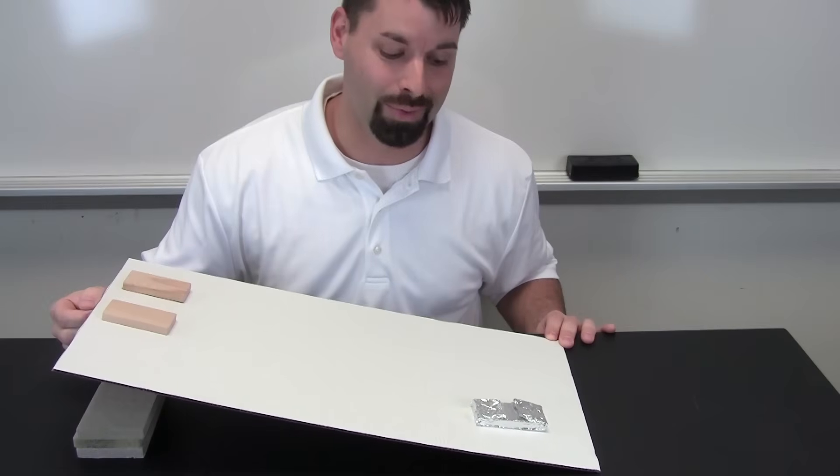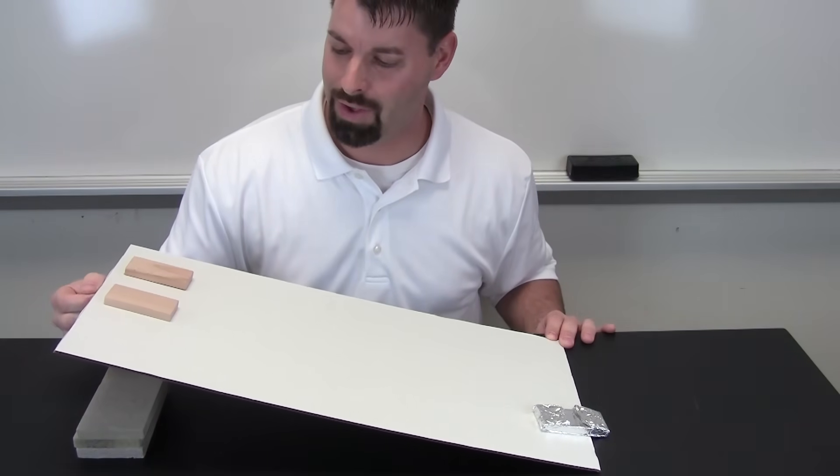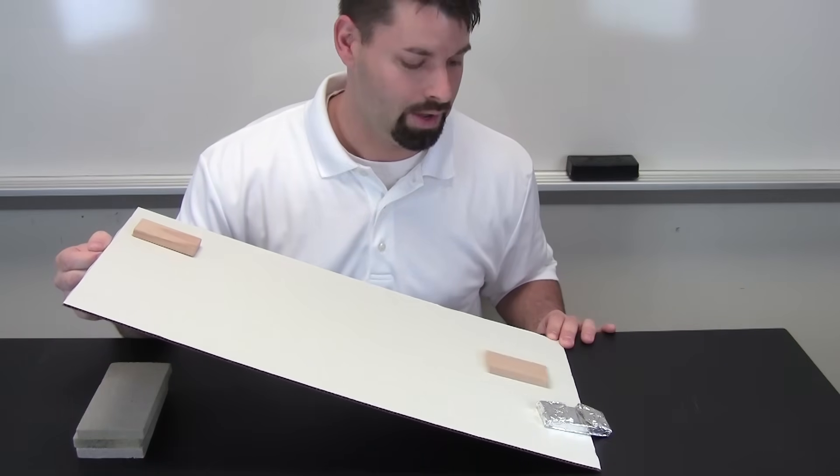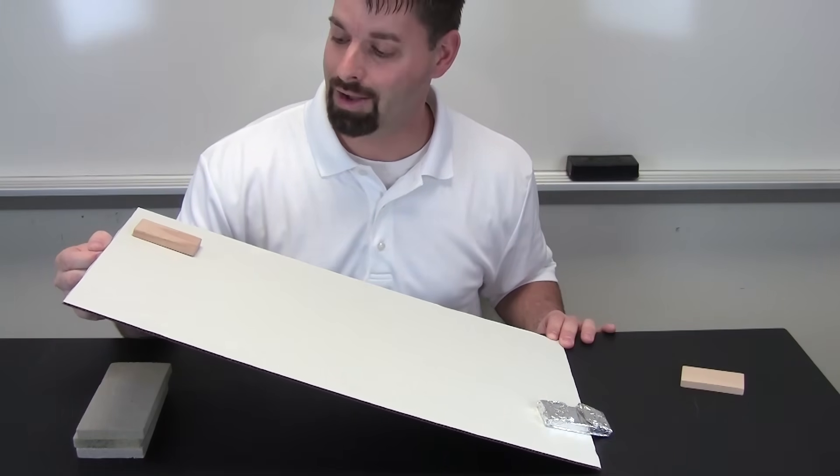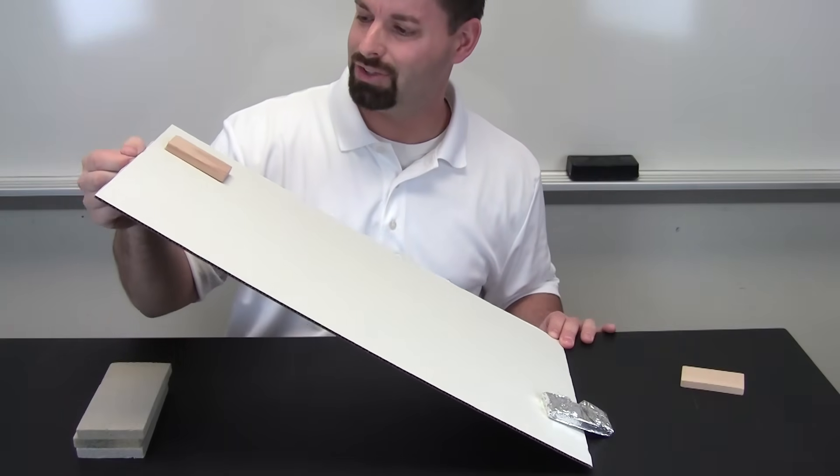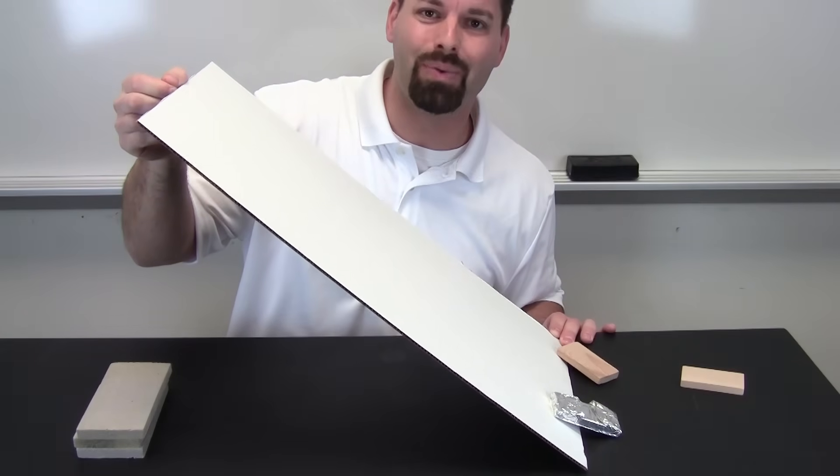Wow! The aluminum foil slid first. Which do you think is going to be next? Keep raising the slide. Higher. The plain block went next. You can even see the friction in action here. It is hanging on. It does not want to move. The sandpaper goes down.